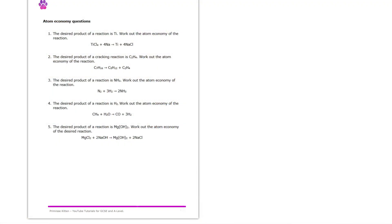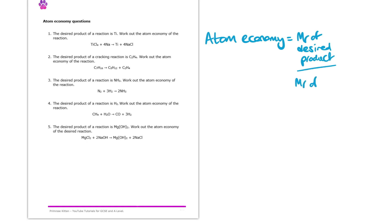Here we're looking at Atom Economy. Before we try these questions, let's have a little recap of what formula we need to calculate these and what it actually means. Atom Economy can be calculated using the following equation: Atom Economy is equal to the total MR of your desired product — the question will always tell us what our desired product is — divided by the total MR of either all the products or all the reactants. So long as you're consistent, it's absolutely fine. Then we times it by 100 to get the percentage Atom Economy. All that Atom Economy is, is a measure of the proportion of reactants that end up becoming useful products.